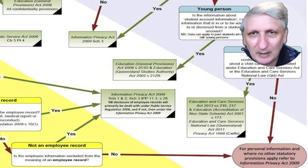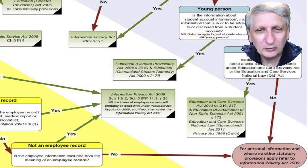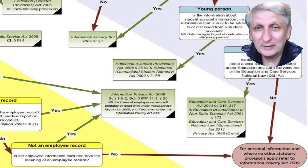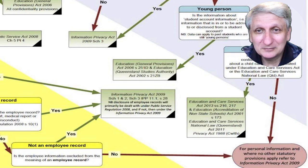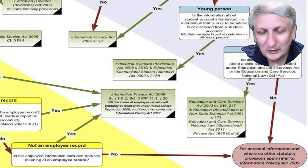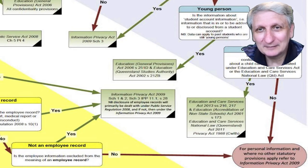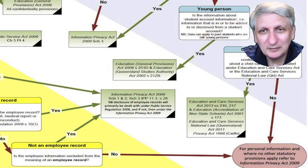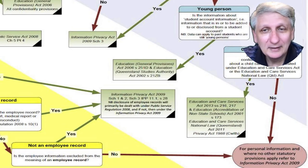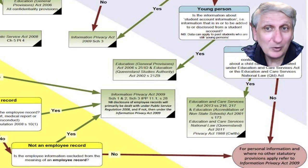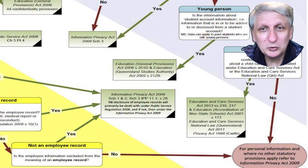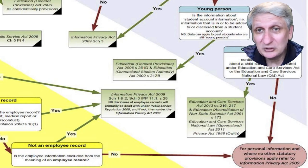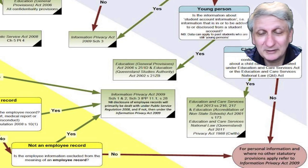A flowchart developed for departmental schools helps you work through what information you can collect, what permissions you need to get, who you can share it with, how it can be stored, and when it has to be destroyed. Simple things such as an excursion form, which might seem very innocuous, suddenly take on a whole new perspective if you wanted to make it an online form and collect the names and phone numbers of parents. That may not be possible — you may have to go through other mechanisms, and while the school may be able to store some of that data, you as a teacher may not be able to have access to parental phone numbers.